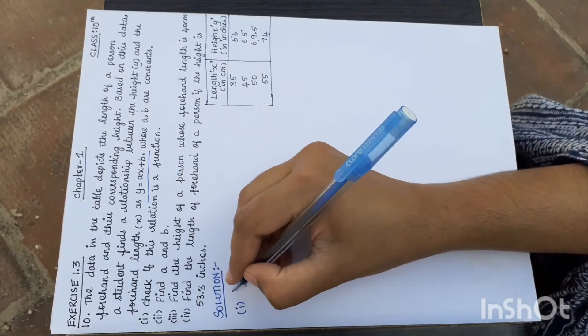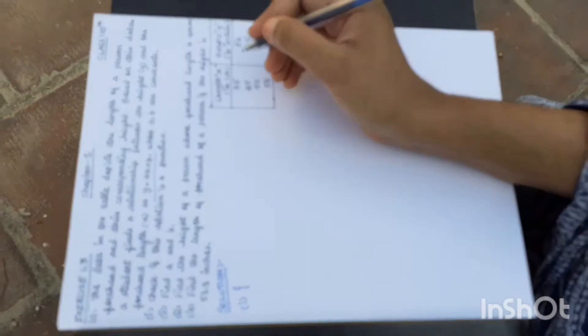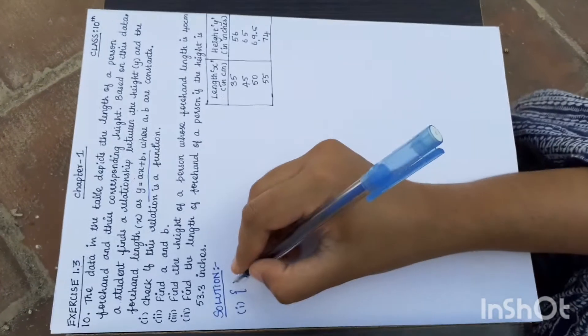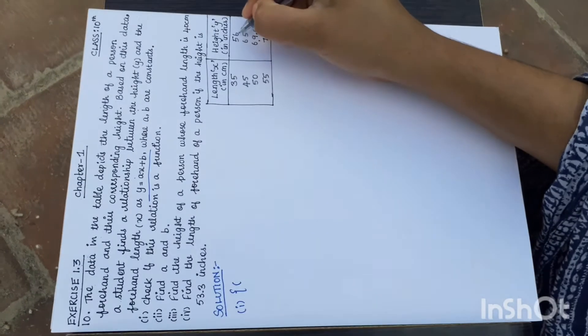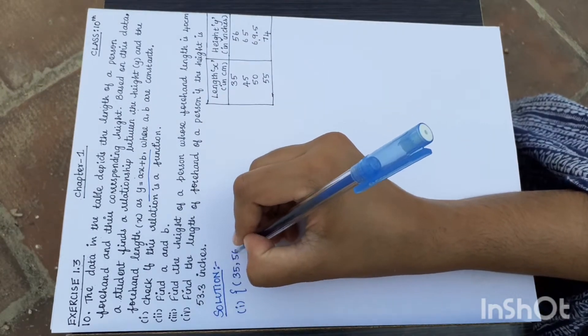First of all, the relation has x and y values. The x values and y values from the table: first pair is 35, 56.